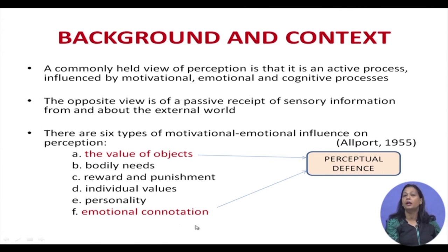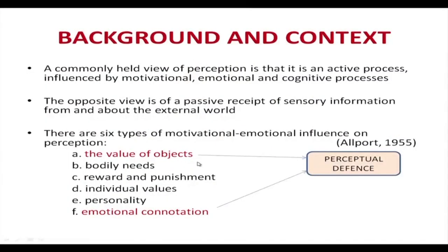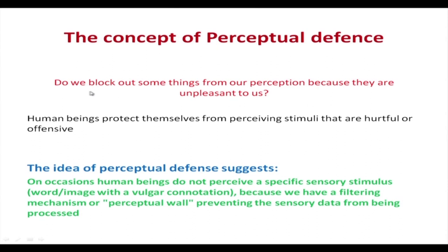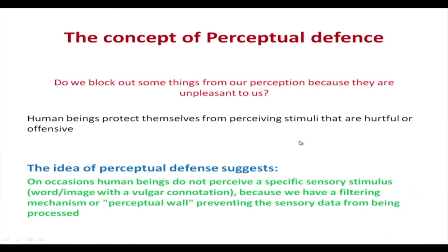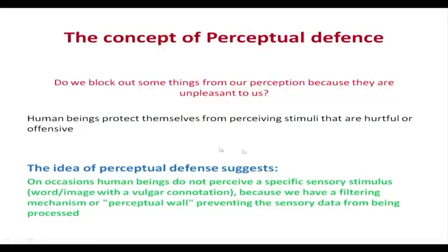All these factors affect how the individual looks at and perceives a stimulus. Of these, two very important factors are related to perceptual defence: the value of objects and emotional connotation. The question that arises is whether, when we talk of perceptual defence, we perceive things in a way that blocks unpleasant stimuli from entering our perception — do we block out things because they are unpleasant?